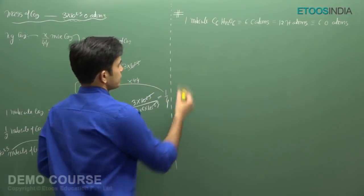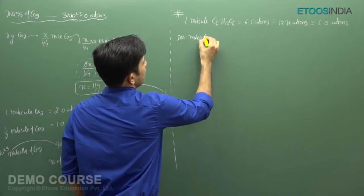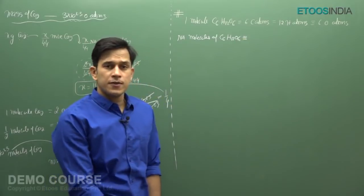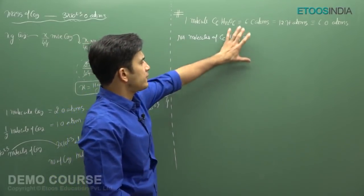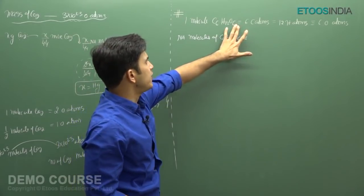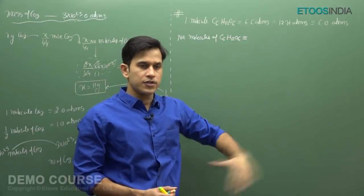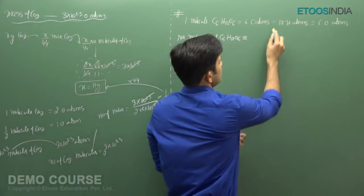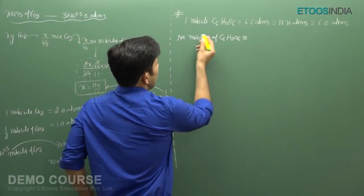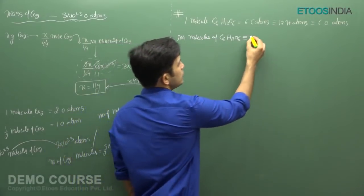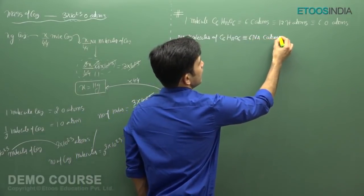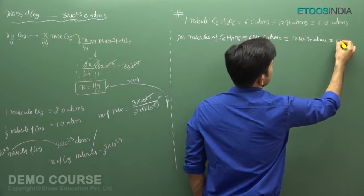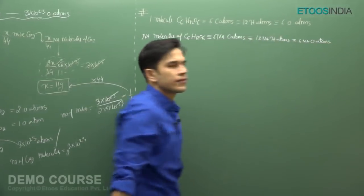Instead of one molecule, if I write Na molecules of glucose C6H12O6, it will have 6 Na carbon atoms. This is my unique way of writing: one molecule of glucose is equivalent to 6 carbon atoms, 12 hydrogen atoms, and 6 oxygen atoms. So Na molecules of glucose contains 6 Na carbon atoms, 12 Na hydrogen atoms, and 6 Na oxygen atoms.